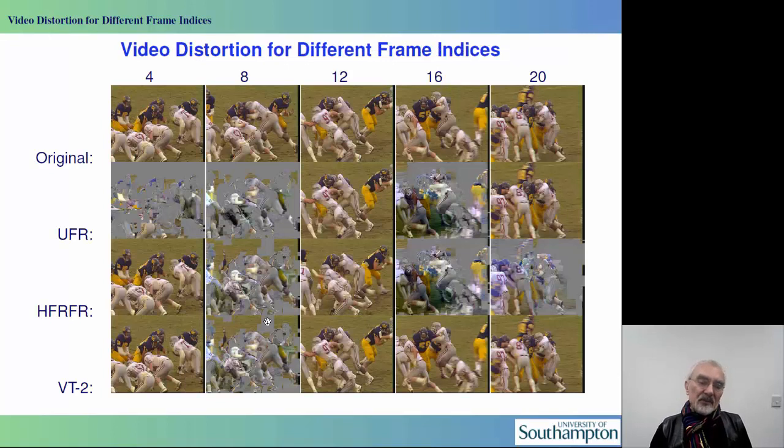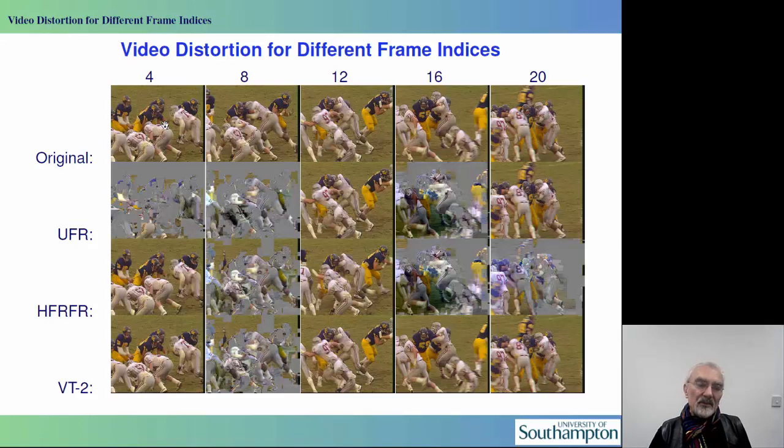In terms of the subjective visual effects, the top row indicates the original flawless video, and the numbers up here represent the frame index. The UFR scenario is badly corrupted, and the higher frequency reuse scheme mitigates this degradation, but the best video quality is doubtlessly achieved by the vectorized transmission, although again, frame 8 is rather badly corrupted.